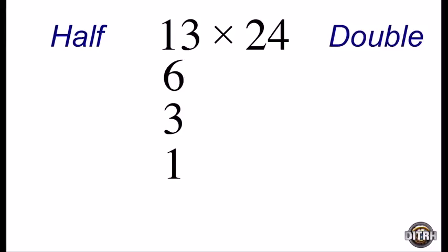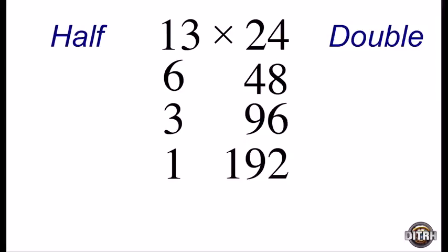The second step is to take the number on the right and keep doubling it. So the number 24 when doubled is 48. Then we're going to double this number again to get 96. And finally we double 96 to get 192.